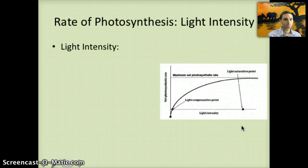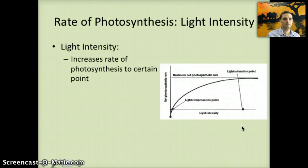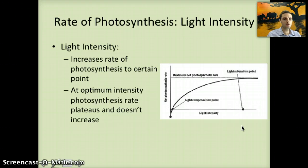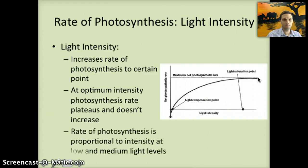The second limiting factor is light intensity. As the amount of light increases, the rate of photosynthesis increases up to a specific point. Eventually it is not able to speed up any further, and as sometimes seen in classroom experiments, too much light can actually cause the plant to burn. At optimum intensity, the photosynthesis rate plateaus and doesn't increase further. The rate of photosynthesis is proportional to light intensity at low and medium light levels.